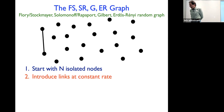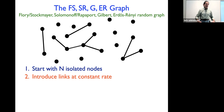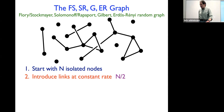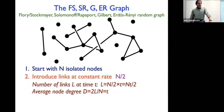We start with N isolated nodes and introduce links at a constant rate. We're free to choose that rate to be anything we want, so let me choose it to be N over 2. At time T, the total number of links in the network is the rate N/2 times time T, giving NT/2.